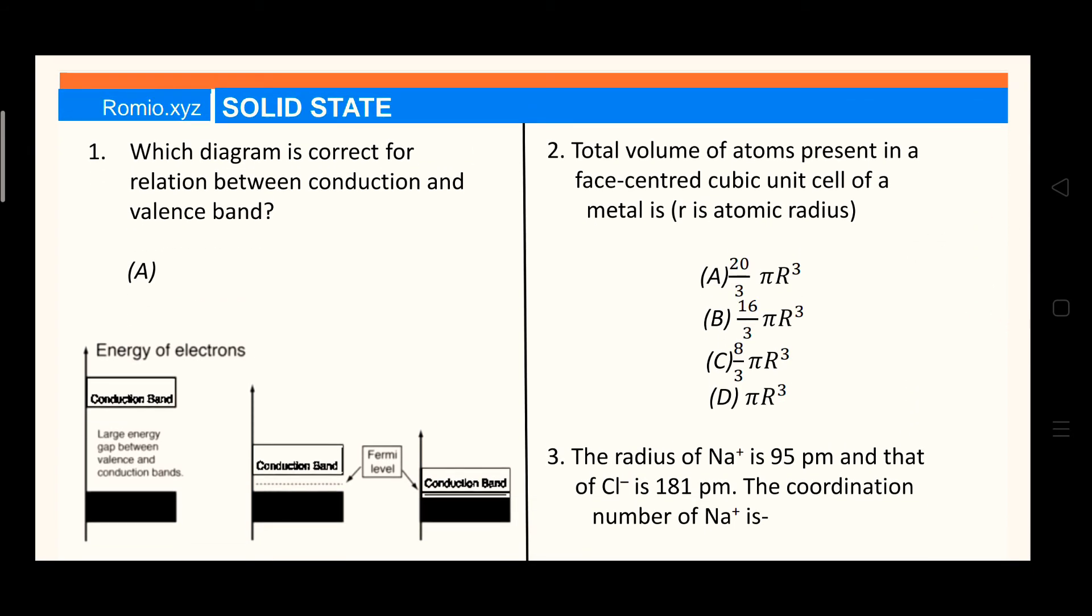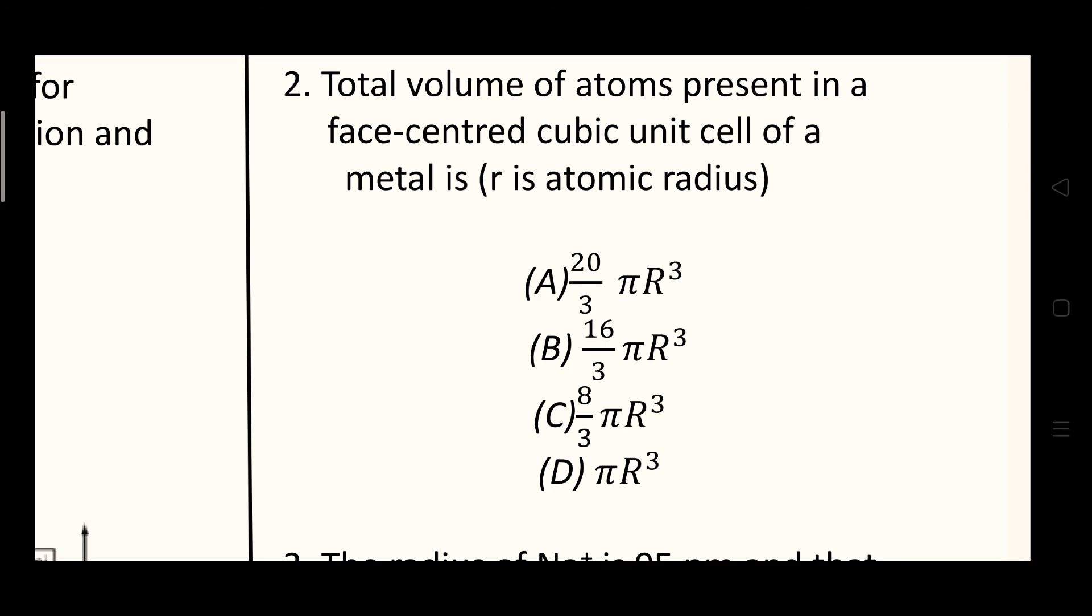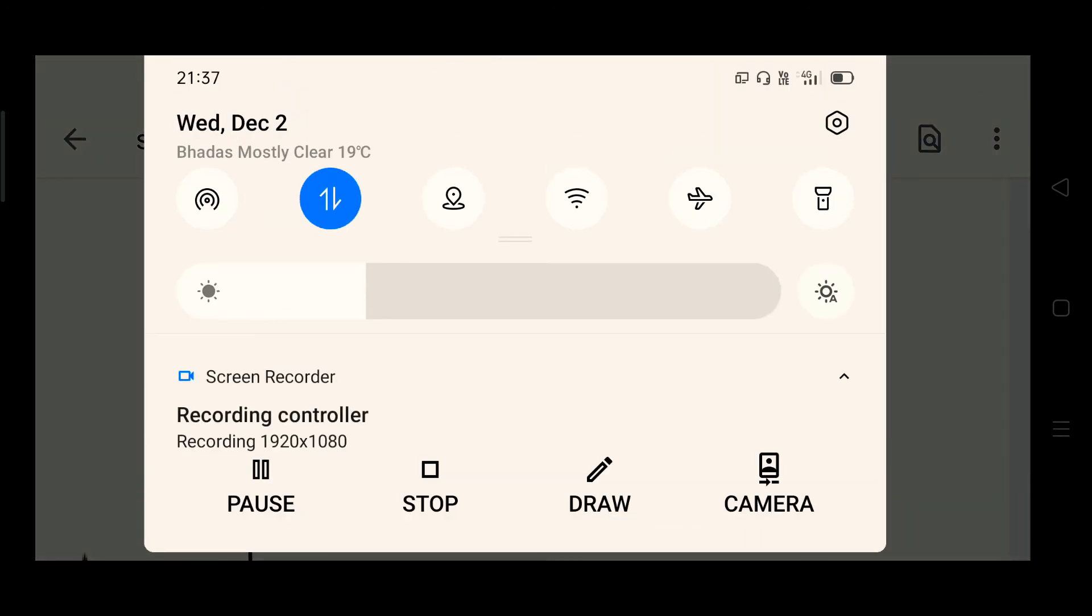The second question is: total volume of atoms present in a face-centered cubic unit cell for a metal, where r is atomic radius. Very interesting question, let me solve it.